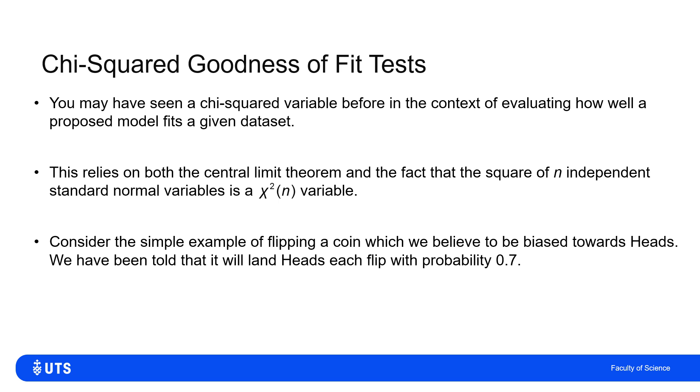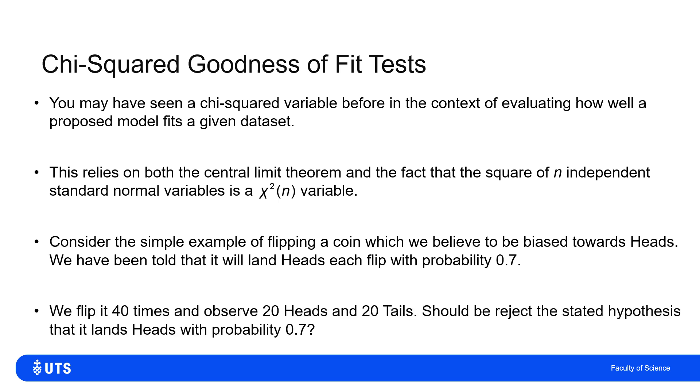I either want to gather some evidence and either say, having gathered my evidence, I still believe that, or the evidence I've gathered makes me reject that. I no longer believe that based on this evidence. So the example I'm going to do is trying to justify or reject the belief that this coin lands heads with probability 0.7. In this totally fictitious scenario, we flip the coin 40 times and get 20 heads, 20 tails.